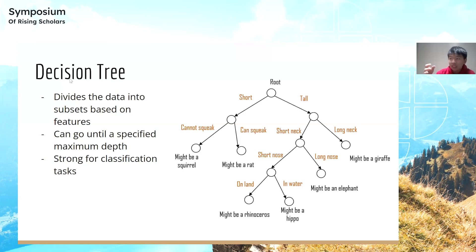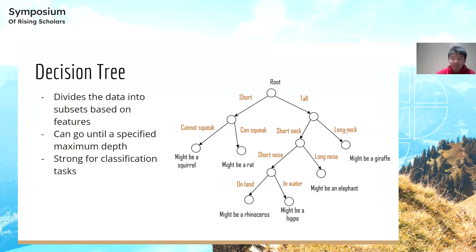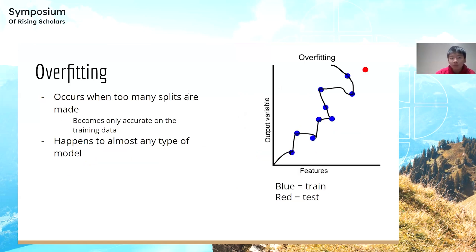Now we get to learning algorithms. A decision tree learns through patterns by splitting data on its features until each final section contains uniform data, down to a specified maximum depth. It's strong for classification tasks. For example, to classify an animal: is it short or tall? If short, can it squeak? If so, it might be a rat. If tall with a long neck, it might be a giraffe. It's basically a map for asking questions leading to a prediction.